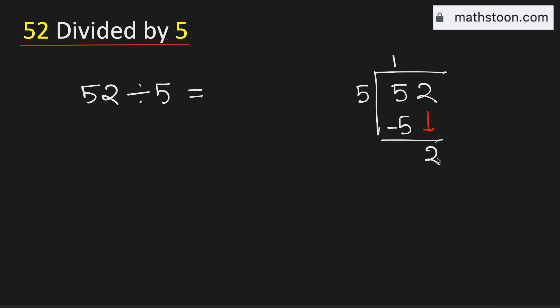As we have brought down this number here, we need to divide it by 5. We know that 5 times 0 is 0. Subtract, we get 2.